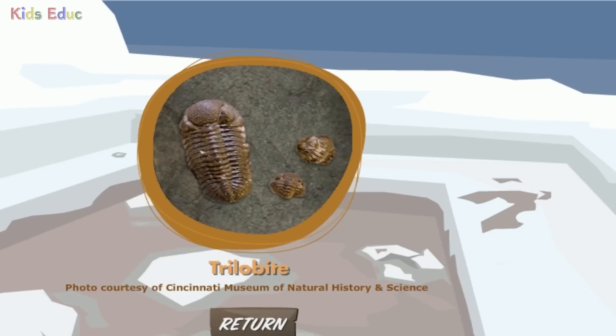Trilobite. This is a good example of a really common fossil. This is called a trilobite. Trilobites were odd-looking, insect-like animals that lived in shallow water in the ocean. Trilobites are very old — they first appeared 600 million years ago. Trilobites are the first creatures on Earth to develop eyes.